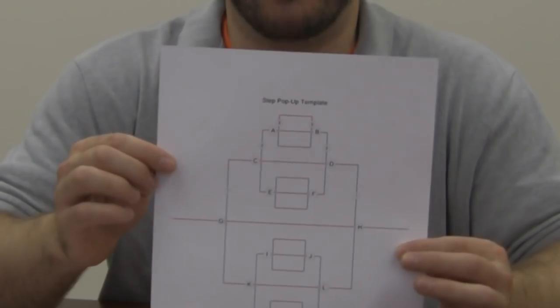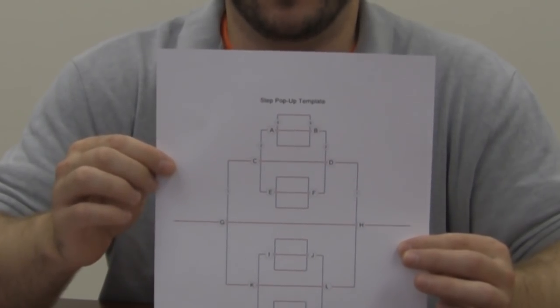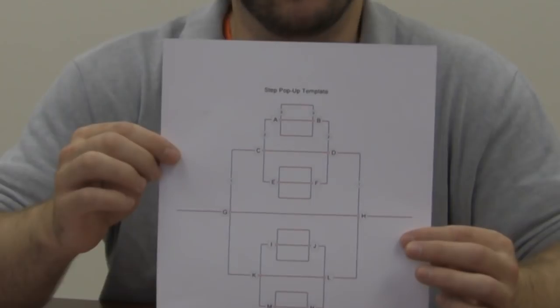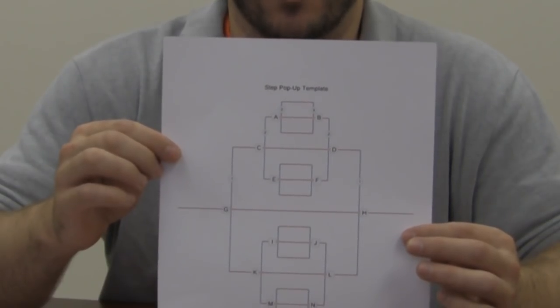The first thing that you'll need to do to make the step pop-up is download and print out a step pop-up template. This template has a number of colored lines as well as letters and numbers to help you understand and know where to cut. So go ahead and download that, print it out, and proceed to the next step.